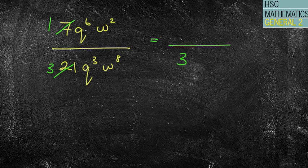I've got the biggest q's on top. So I'm going to start from the top. 6 take away 3 is 3, so it's q to the power of 3. And I've got a bigger number on the bottom for the w's, so 8 take away 2 is 6, so it's w6. So always start where the bigger number is, and that's where it belongs. A few people will get this one a little bit incorrect.